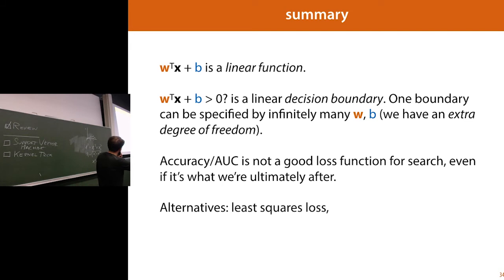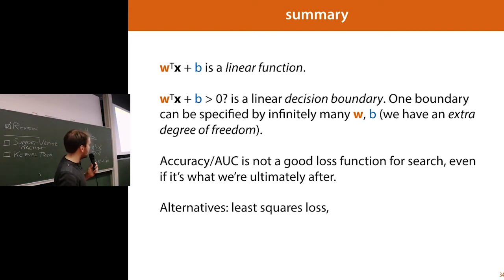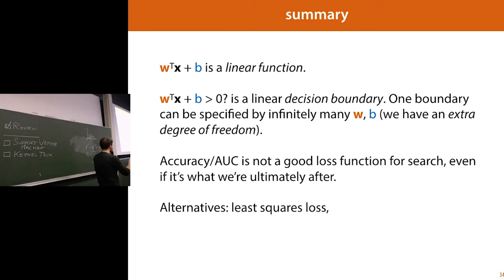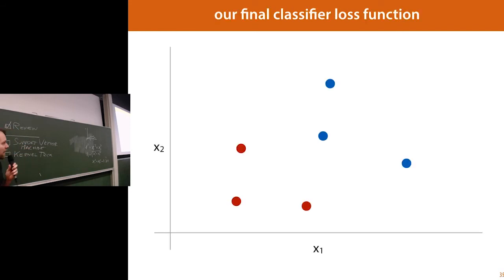So to summarize what we've talked about: a linear function, how we turn it into a classifier, the extra degree of freedom meaning many different W's and B's can specify the same line. We're interested in optimizing accuracy or area under the curve, but those aren't good loss functions for searching. The alternatives we've seen so far are least squares loss and cross-entropy loss, and now we're going to talk about a third loss function.